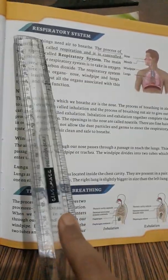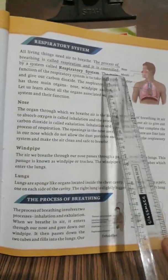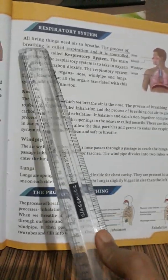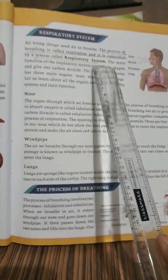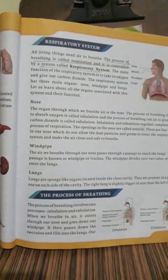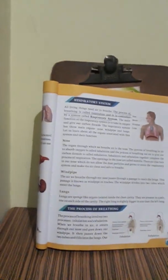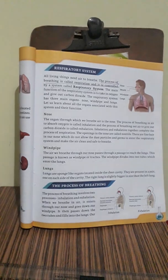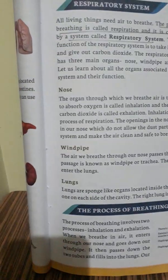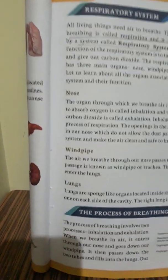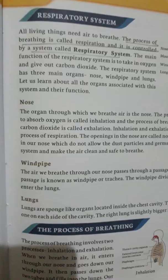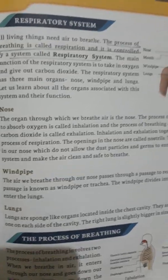The process of breathing is called respiration and it is controlled by a system called the respiratory system. It helps us to breathe in air, which is called inhalation, and breathe out waste air, which is called exhalation.